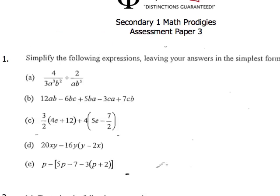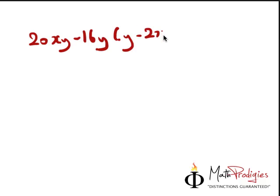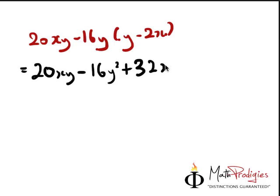Cool. So now we're going to move into question number 4, part 4: 20xy minus 16y times y minus 2x. For this kind of question, again, it's very simple, very straightforward. Just open up the bracket. So you have 20xy minus 16y times y gives you 16y squared. Minus times minus, straight away you write down a plus. 16y times 2x gives you 32xy.